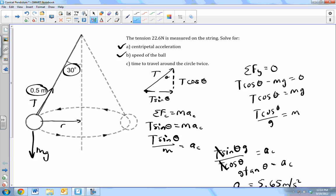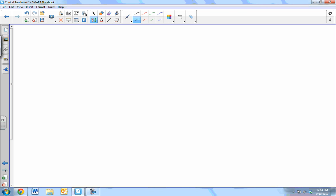Time to go around the circle twice. Velocity is distance over time. The distance that we travel is 2 pi r times 2 divided by time.